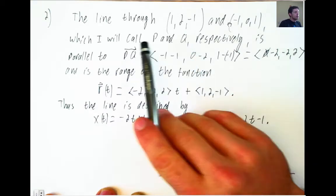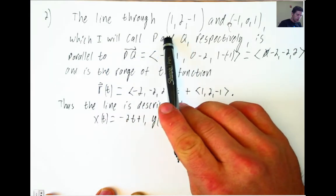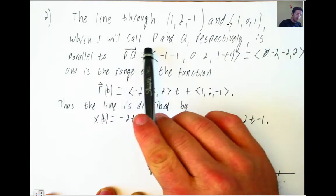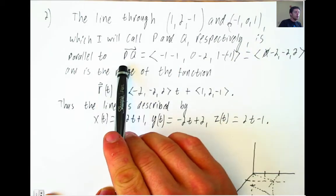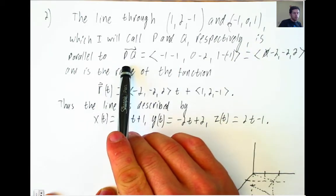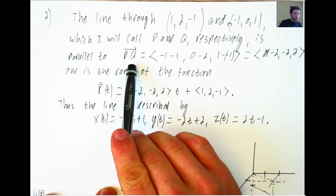So here I started with saying the line through these two points, which I will call P and Q respectively, is parallel to the directed line segment from P to Q, which is a vector.